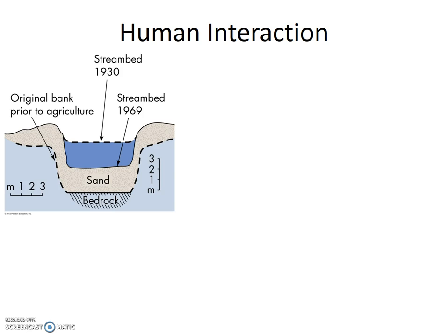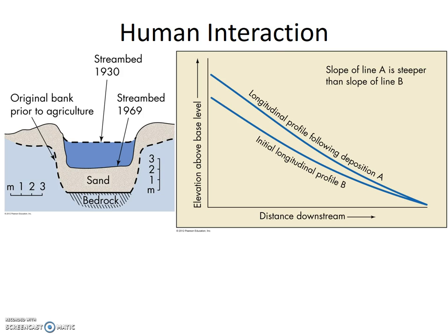The streambed elevation was lowered compared to the 1930 farm-dominant streambed elevation, but was still higher than the original streambed elevation when the area was primarily forest. On the graph on the right, the x-axis is distance downstream and the y-axis is elevation above base level. The two blue lines are longitudinal profiles of a stream. The base level stays the same, but when the stream deposits sediment on its bed, the elevation of the bed is raised — from the bottom blue line to the top blue line — which increases the gradient, increases velocity, increases sediment load, and the stream gets back into equilibrium.